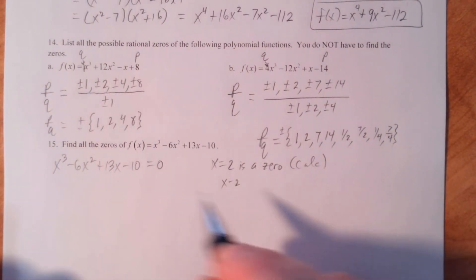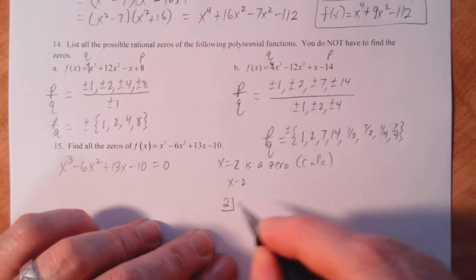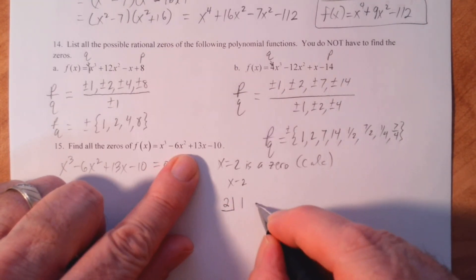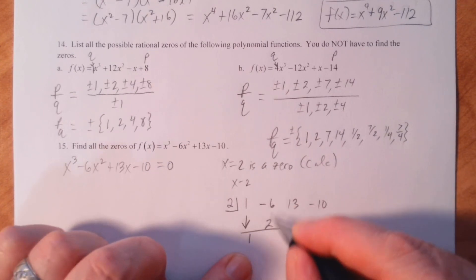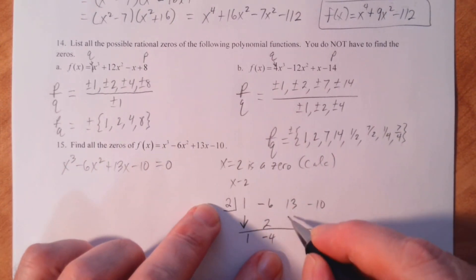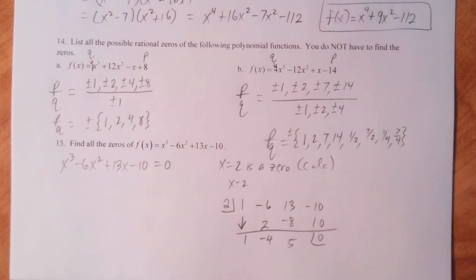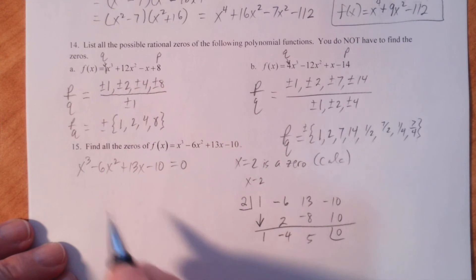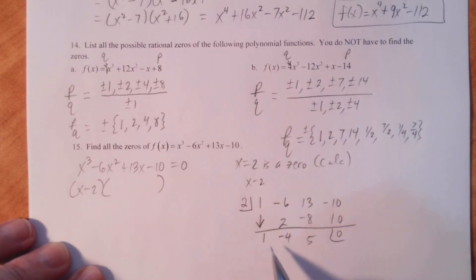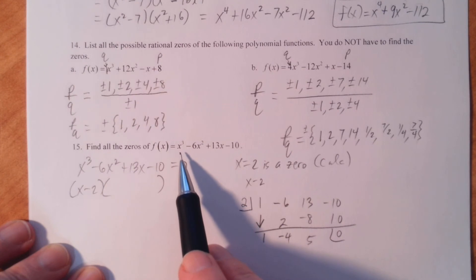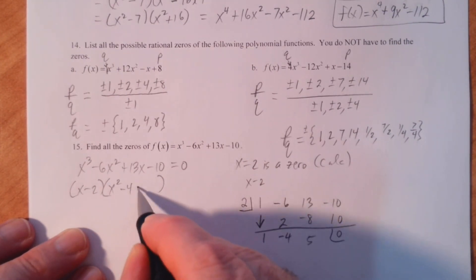So that means if we divide by x minus 2, we should get a remainder of zero. Two goes in the box. We've got coefficients of 1, negative 6, 13, and negative 10. We'll drop the 1. Multiply, we get 2. We always add in the columns — we get negative 4. Multiply here, you get negative 8. When you add, you get 5. And 2 times 5 is 10. We do get a remainder of zero.